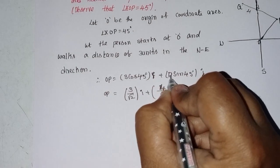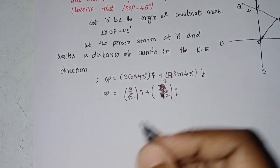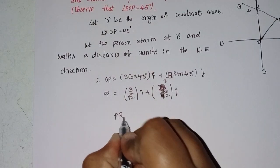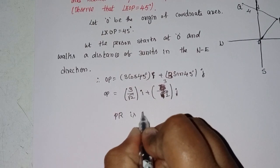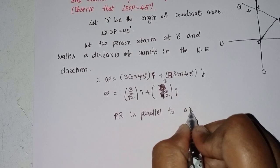This distance is 3 in the north-east direction. OP is 3 in the north-east direction. Next, PR is parallel to the x-axis.